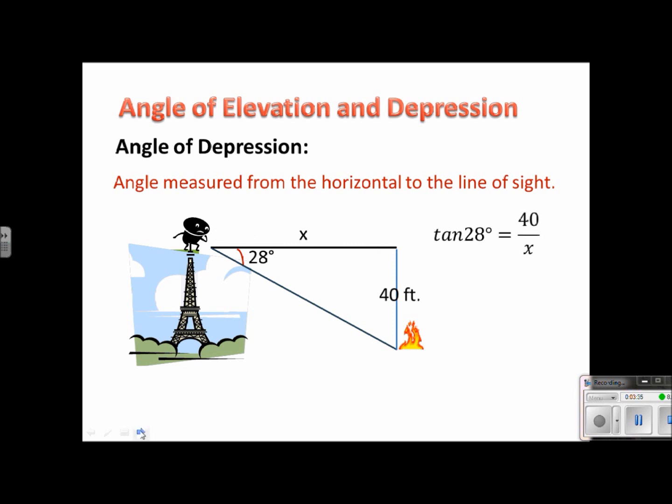So we can use tangent again because from this angle, we have an opposite and an adjacent. So we would set it up tangent 28 equals 40 over x.